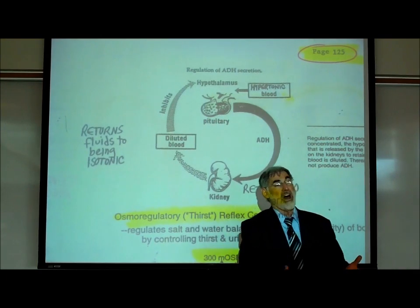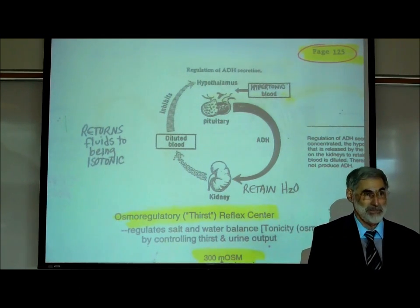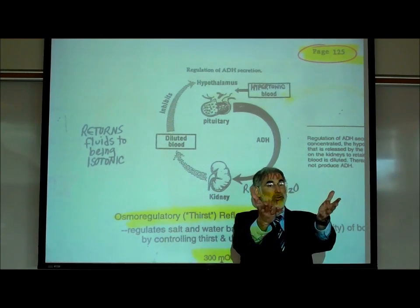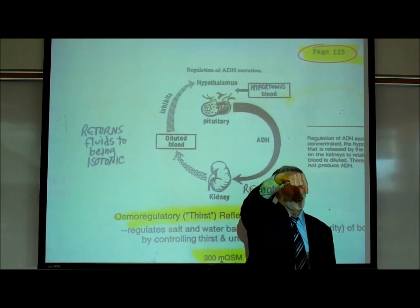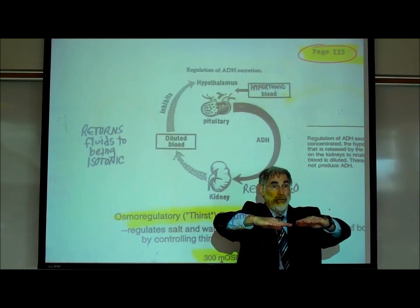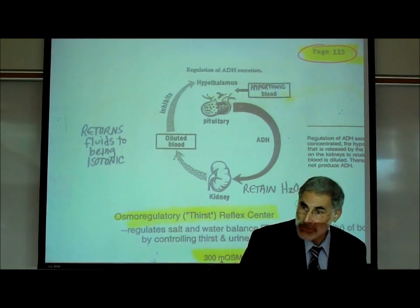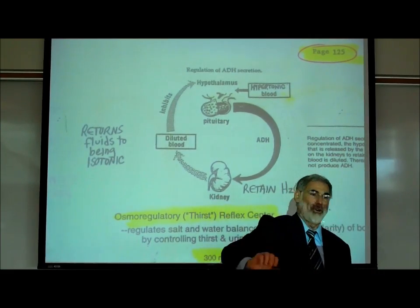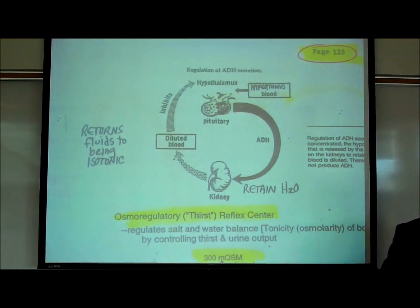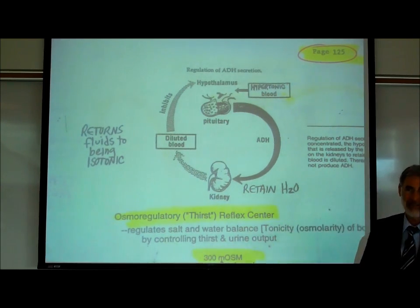An example of a device in all our homes that uses a negative feedback mechanism is your toilet. You flush it, the water level in the tank goes down, and water starts filling up until it reaches the set level and shuts off so it doesn't overflow. You flush again, the water goes down, and it refills back to where it's supposed to be. That's a negative feedback response — the idea is to maintain something constant. That's a homeostatic reflex.